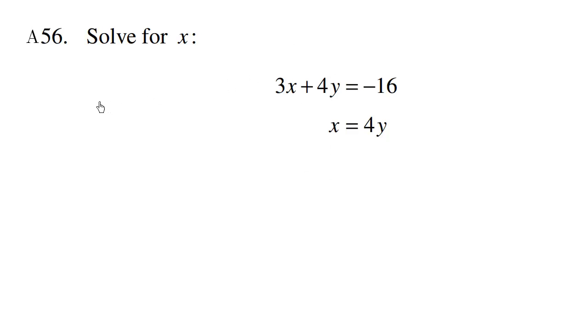So one good thing to try here is to simply rewrite this as 3x plus 4y, which happens to be x. This x here is the same as 4y based on the second equation, so we're simply replacing 4y with x.